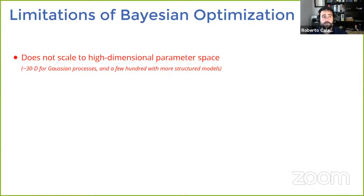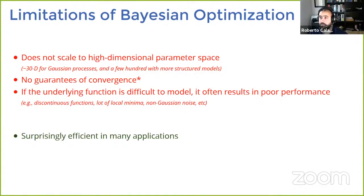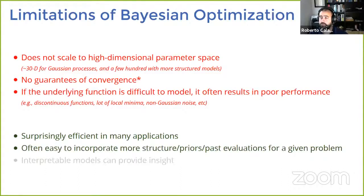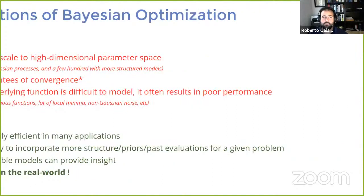The advantages: it's surprisingly efficient in many applications and works very well. It's easy to incorporate more structure if you have it. The models obtained are interpretable and provide insight into the underlying function. It works well in the real world — in my career I've never tried Bayesian optimization on a problem and had it completely fail. It's a fairly robust algorithm. It's also a very active research topic, with important challenges including how to scale to hundreds or thousands of parameters and how to design better acquisition functions.